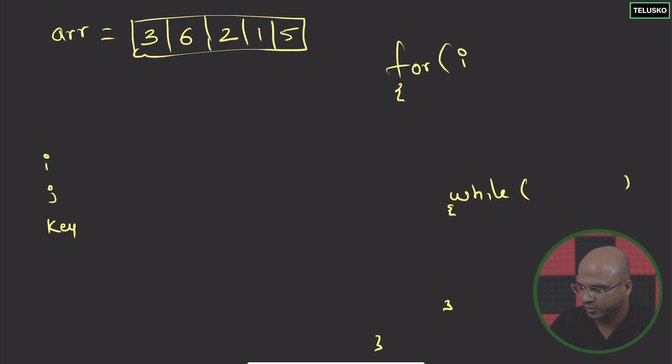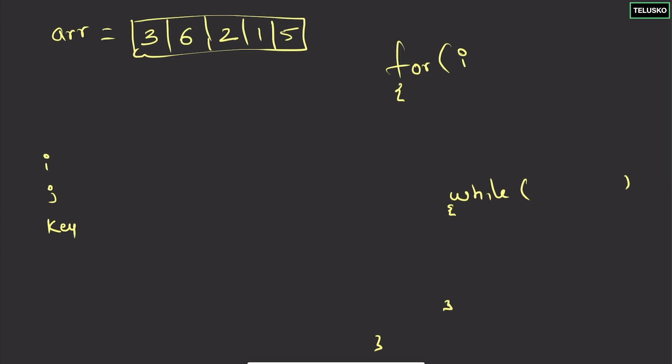We're not going to start i from the first element — we start i from the second element, and j will be the first. So i represents the outer loop position and j changes in the inner loop. That's why we use i and j for outer and inner loops.